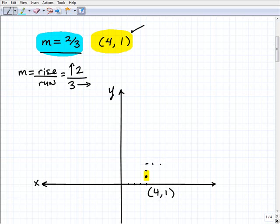So that'd be one, two, one, two, three. So in other words, I went up two here, this represents my rise, and now I'm going to run out to the right three units this way.